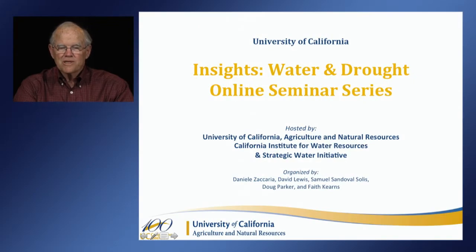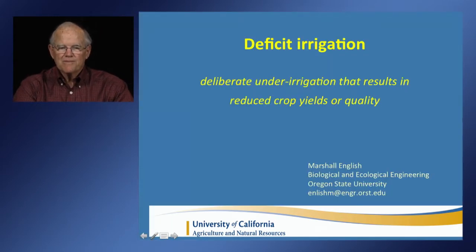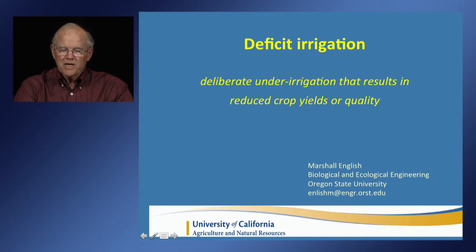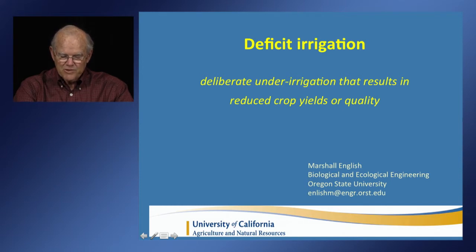My name is Marshall English. I'm from the Department of Ecological and Biological Engineering at Oregon State University. I'm going to be presenting some perspectives on deficit irrigation, which is defined by some as deliberate under-irrigation of a crop such that yields are reduced. That's the key element — the reduction in yields. It is an altogether different approach to irrigation management, altogether different from conventional irrigation, but it is increasingly common worldwide, particularly in areas of water shortages.